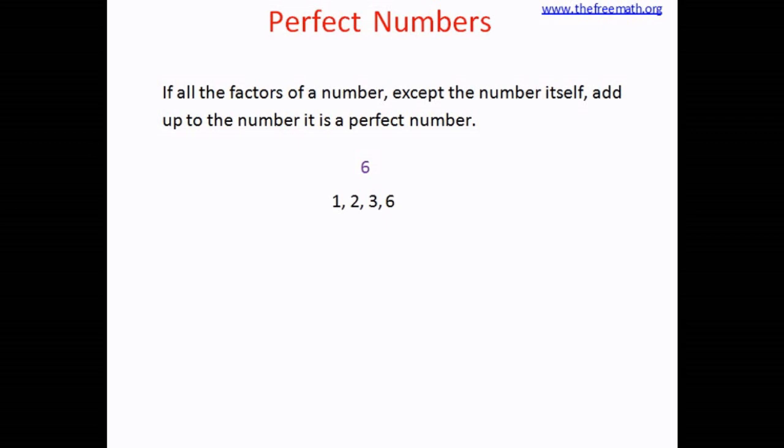But we have to consider all the factors except that number itself. So we have to exclude 6. We will not consider 6. Now let's add the remaining factors. That means 1 plus 2 plus 3, that equals 6. So the sum is equal to the number itself. That means 6 is a perfect number.